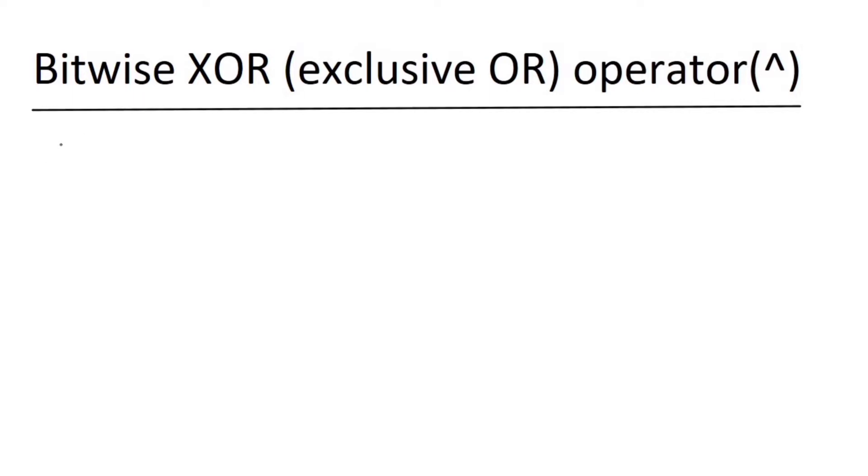So let me write the truth table. A, B, and output. The values are: 0 0, 0 1, 1 0, 1 1.